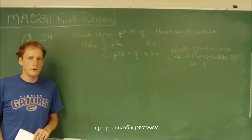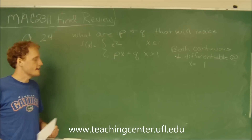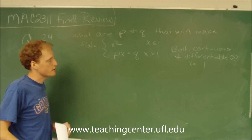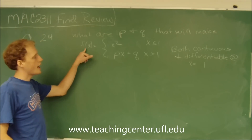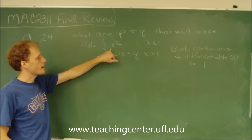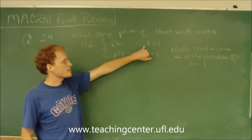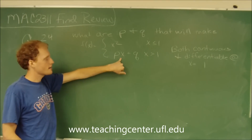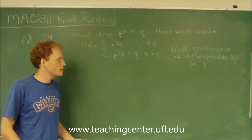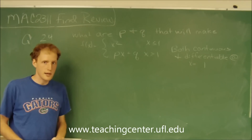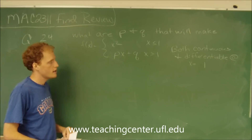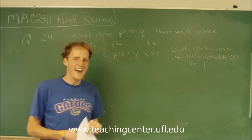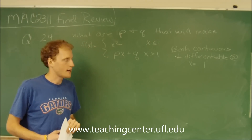This is question number 24. It says, which values of p and q will make this function — f of x equals x squared when x is less than 1, and p times x plus q when x is greater than 1 — both continuous and differentiable at x equals 1?